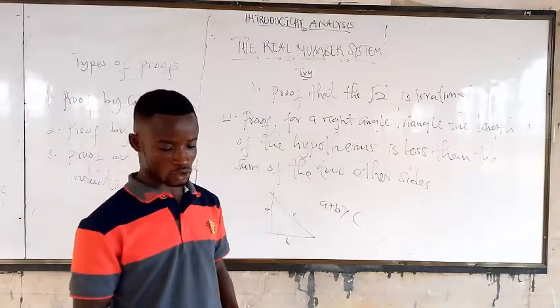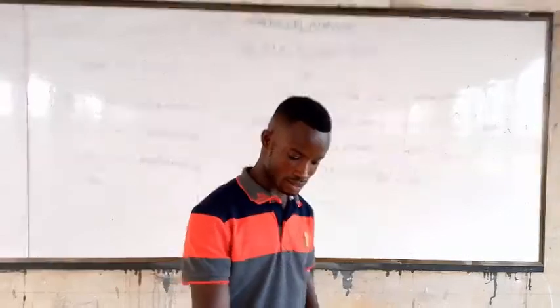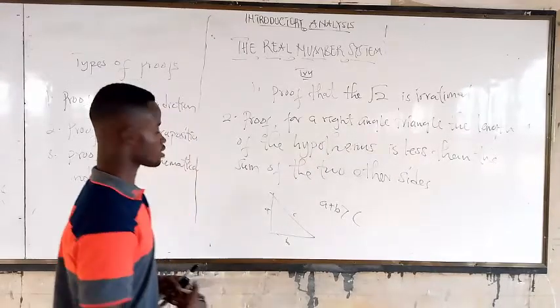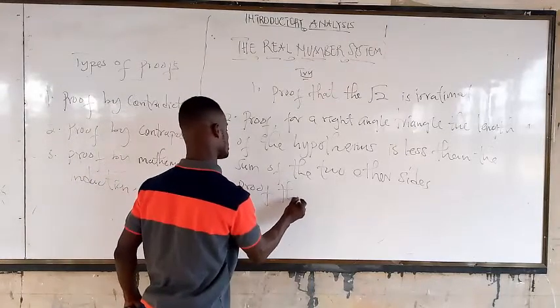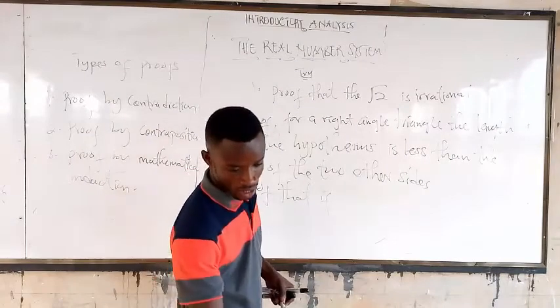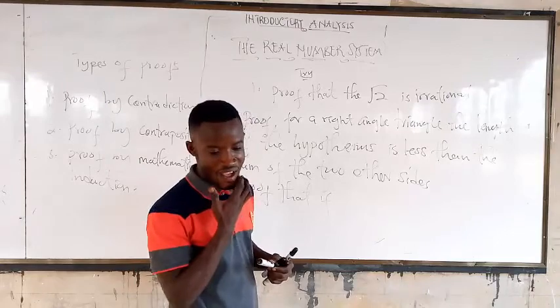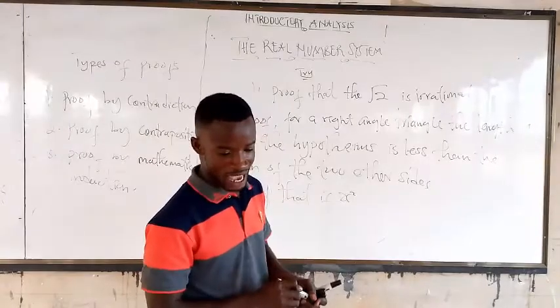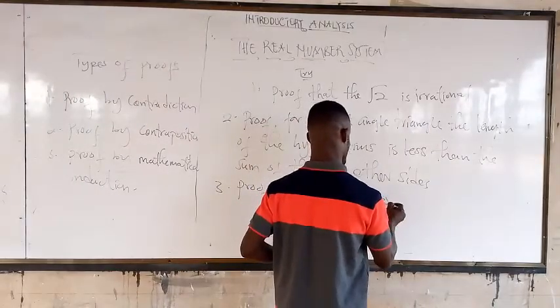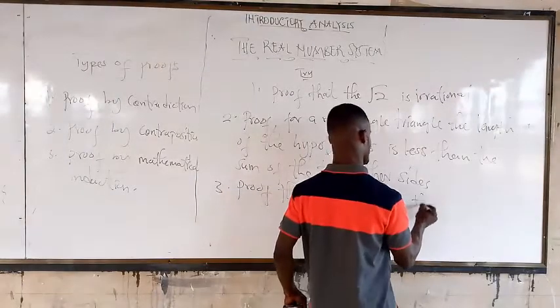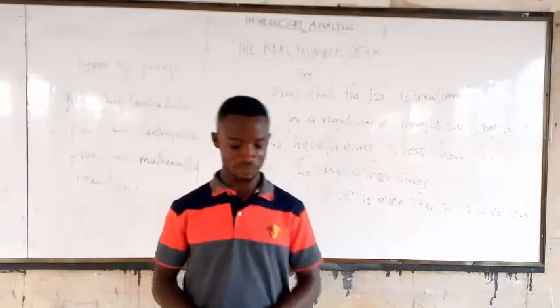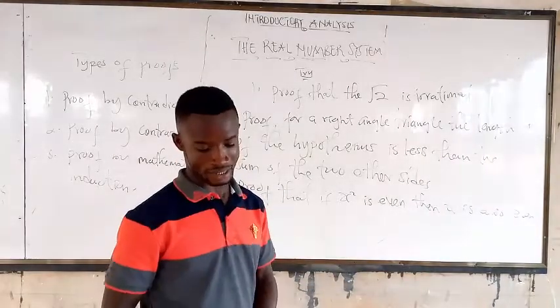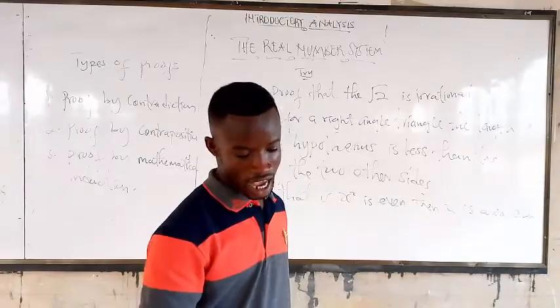Another one I would like you to go and prove: prove that if s squared is even, then s is also even. For this one, you will need proof by contraposition to arrive at your final answer.